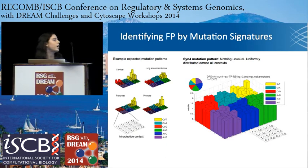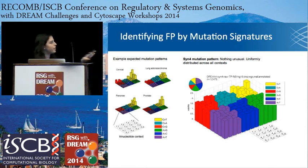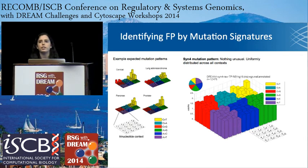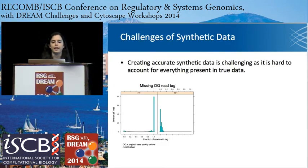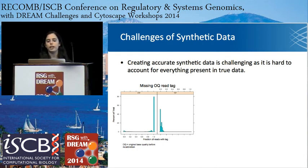We applied this method to the synthetic challenge data, and what we saw was a very flat, relatively equal signature across all mutation contexts — no dominant signature — suggesting there was no smoking gun for a false positive artifact in this synthetic data.